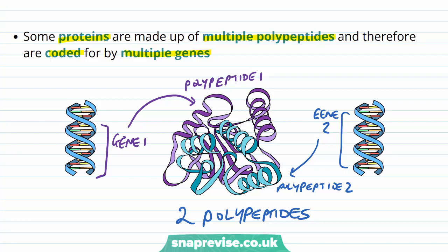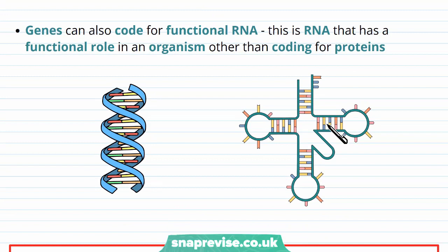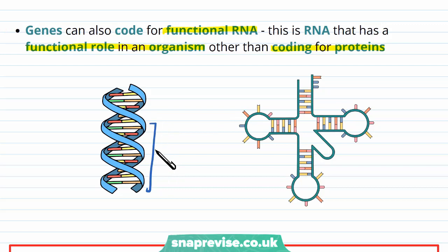As well as coding for polypeptides, genes code for functional RNA. RNA is another version of a polynucleotide which can have different functional roles. In the organism, they act in roles that aren't involved with coding for proteins. For example, the DNA gene can code for a particular molecule of RNA which becomes tRNA — transfer RNA — which is an example of a type of RNA with a specific function. In this case, tRNA helps carry amino acids around the cell. There's also rRNA and mRNA as well. So by definition, genes are sections of DNA coding for polypeptides and functional RNA.